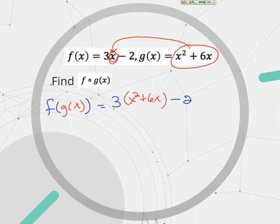So I would have 3, but instead of x, I'm going to use parentheses and write that whole expression for g of x, x squared plus 6x, and then minus 2. So this went right here where the x is. The 3 is still there, the minus 2 is still there. But instead of x, I have to put the g of x function in there. Once we get this far, we just have to distribute, combine like terms. So I can distribute that 3. So I have 3x squared plus 18x minus 2.